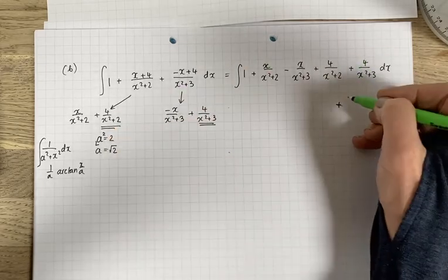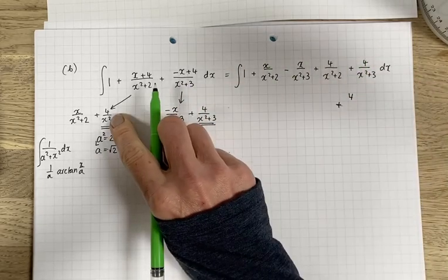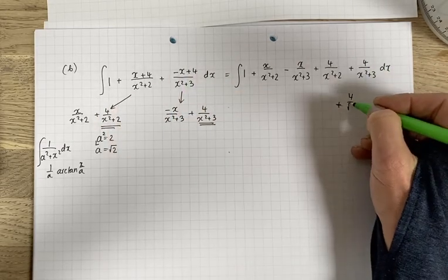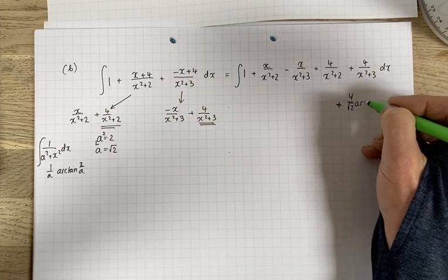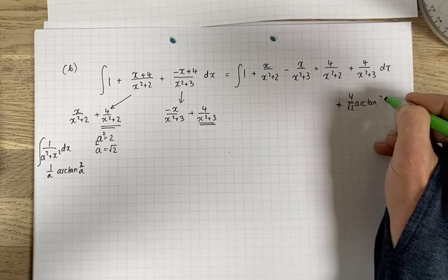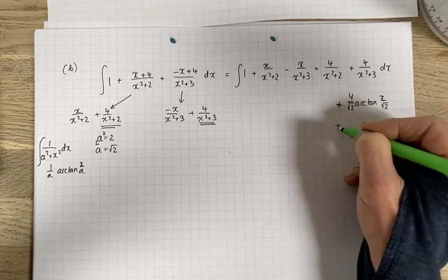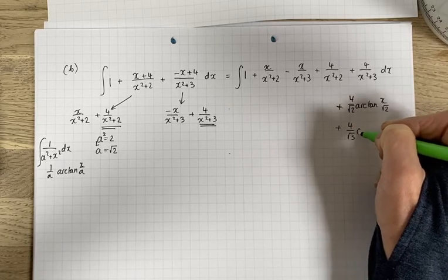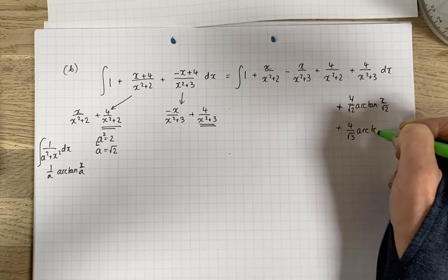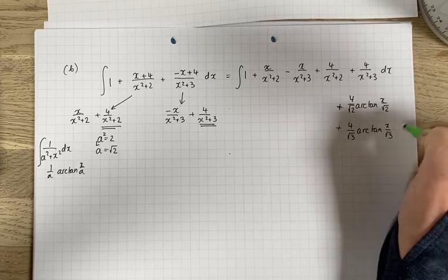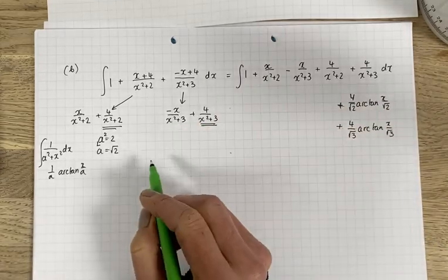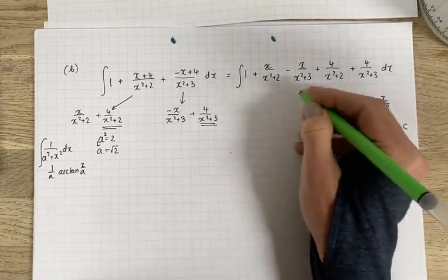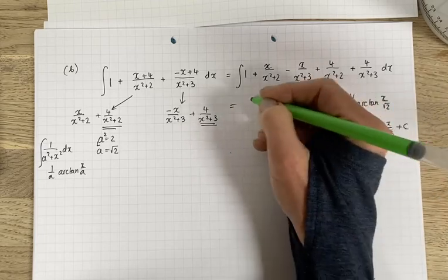So this one here will go to, let's write it over here. So 4 on the top, because we didn't normally have 1, and a is root 2. So we'll divide it by root 2, and it's going to be arctan x over root 2 plus, this one will have 4 over root 3, arctan x over root 3. So hopefully I don't need to explain why, because we've just explained. So we've got plus c. So now we just need to work out the other two missing two.